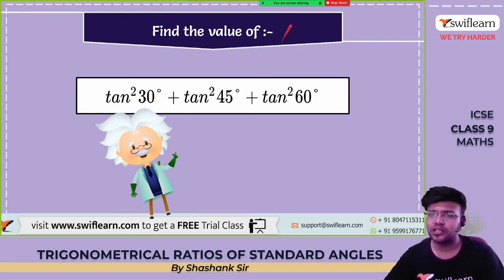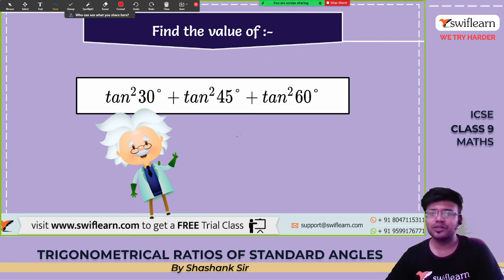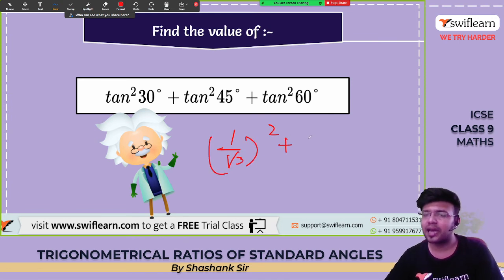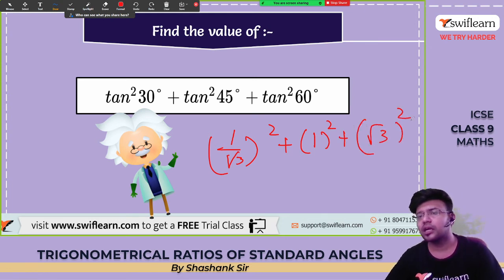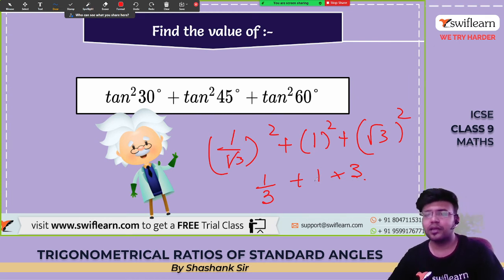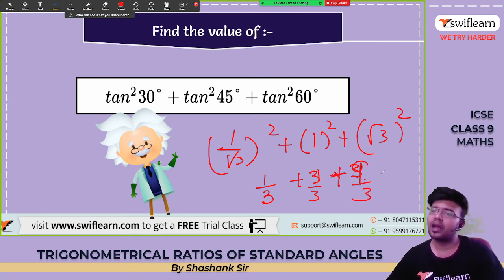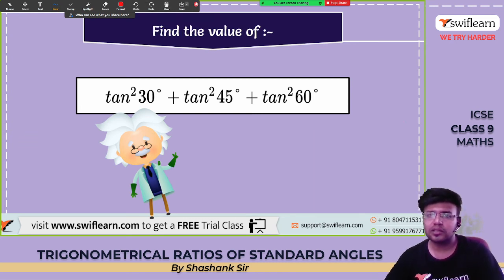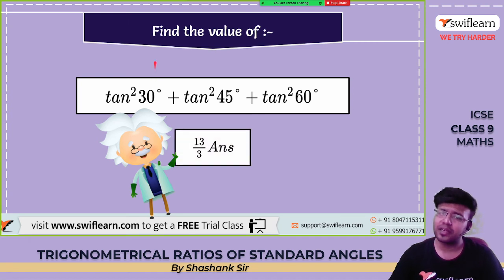Find the value of tan²30° + tan²45° + tan²60°. Tan 30° = 1/√3, so tan²30° = 1/3. Tan 45° = 1, so tan²45° = 1. Tan 60° = √3, so tan²60° = 3. Taking LCM as 3: 1/3 + 3/3 + 9/3 = 13/3. The answer is 13/3.